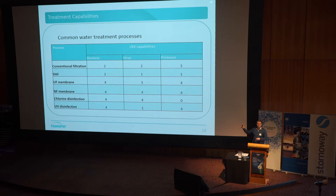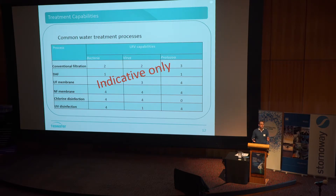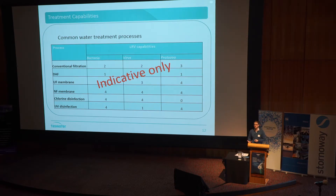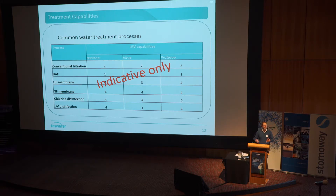I hate this slide — I put it up every time and I hate it because people take it as gospel. These numbers are indicative of what different treatment processes can do. We have a multi-barrier approach because different treatment processes are good at doing certain things and reducing different types of bugs. A good example is chlorine disinfection: chlorine is really good at killing viruses and bacteria, but it's rubbish at killing protozoa — so if you swim, just watch out. UV disinfection is kind of the opposite: really good at inactivating protozoa and bacteria, but not so good with viruses. That's why we use multiple treatment barriers along a train to get to our water quality objectives.